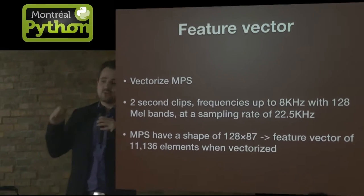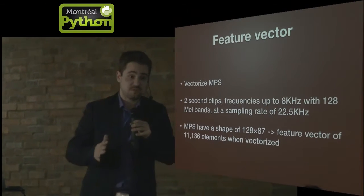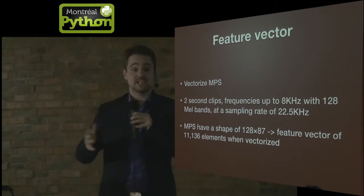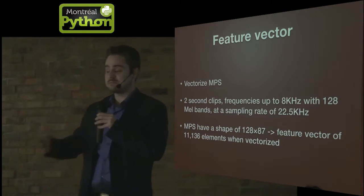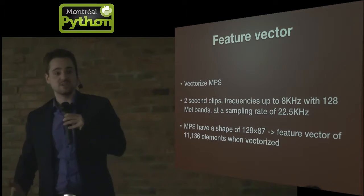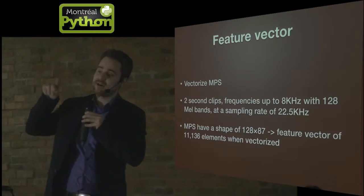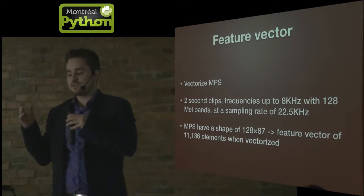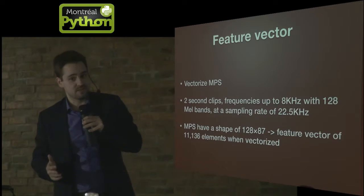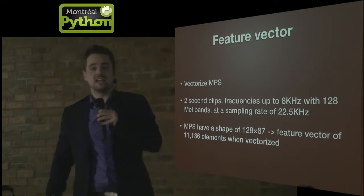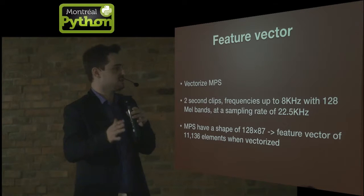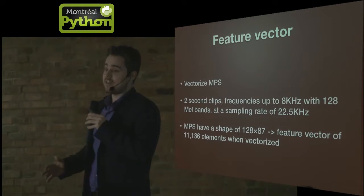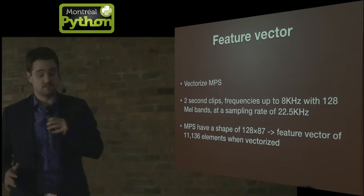So we need feature vectors for the model. We have a Mel power spectrogram that's a matrix; we need an actual vector of numbers. The simplest thing is to just vectorize it — take every row of the matrix, stick them one next to the other, and that gives me, for two seconds' worth of audio, a feature vector of approximately 11,000 elements. So I now have a way to represent my audio for the models.